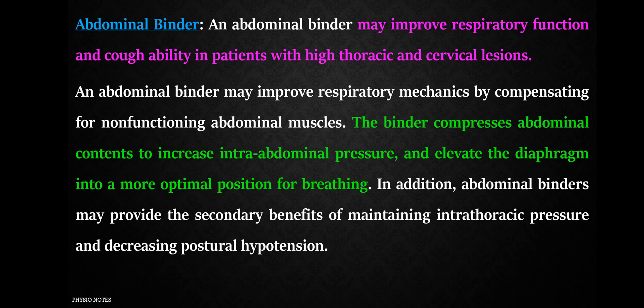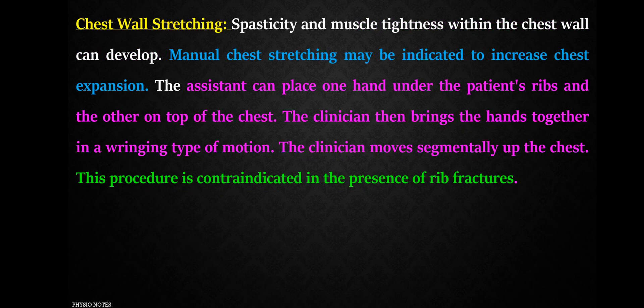An abdominal binder may improve respiratory function and coughing ability in patients with thoracic and cervical lesions. The binder compresses the abdominal contents, increases intra-abdominal pressure, elevates the diaphragm to a more optimal breathing position, and helps maintain intra-thoracic pressure while decreasing postural hypotension. Chest wall stretching is also indicated to increase chest expansion, but is contraindicated in cases of fracture.